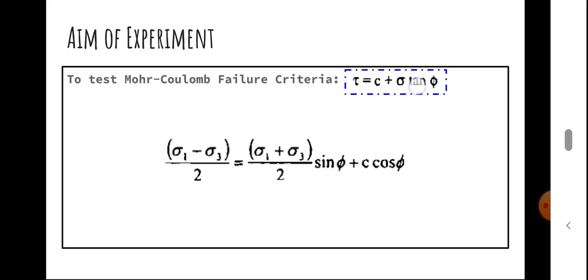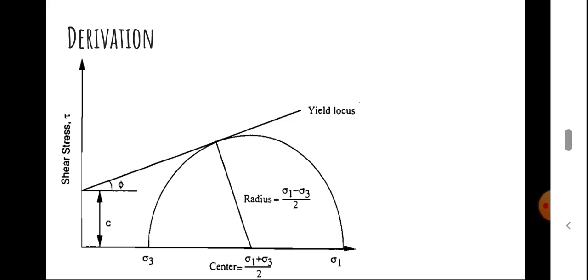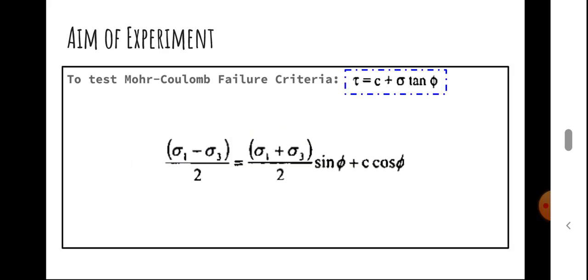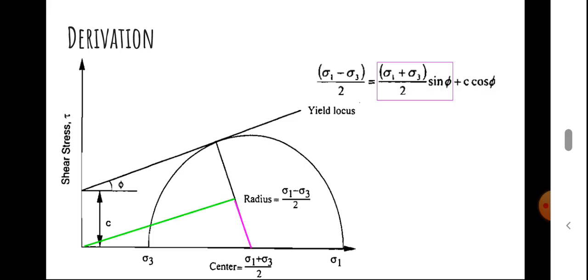We will see how the Mohr-Coulomb equation is rewritten in a different form. As previously discussed, in the case of Mohr-Coulomb failure it is basically an envelope of a straight line, and at the point where it intersects, at that particular plane of orientation, our sample breaks. We are rewriting that same tau and sigma based equation in terms of principal stresses.